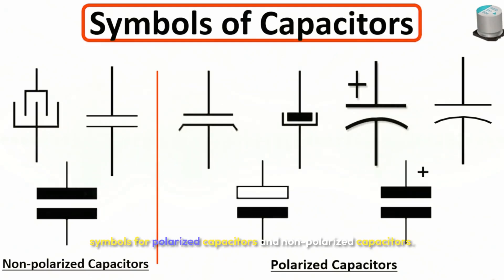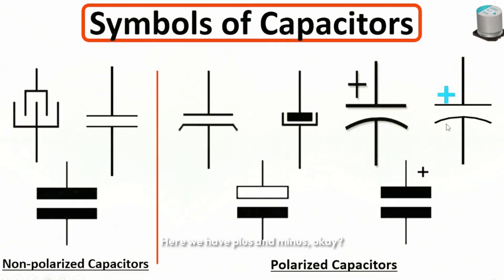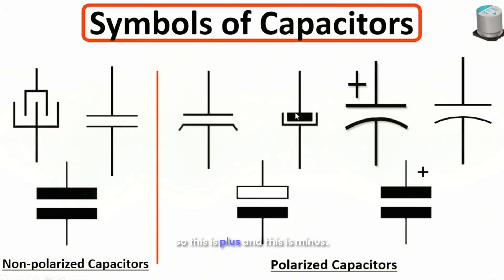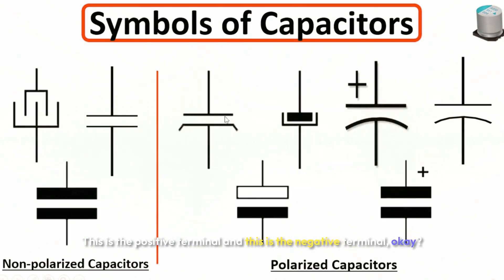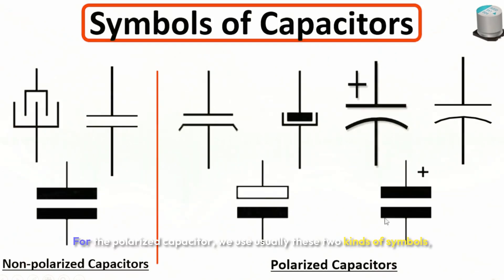Now let's look at capacitor symbols. There are two types: symbols for polarized capacitors and symbols for non-polarized capacitors. For polarized capacitors, such as electrolytic capacitors, you can see the plus and minus markings - the top terminal is always the positive terminal and the bottom is the negative terminal.